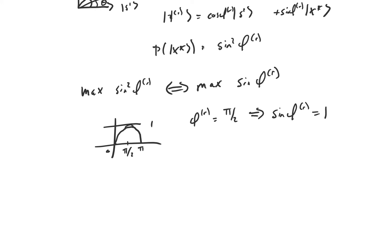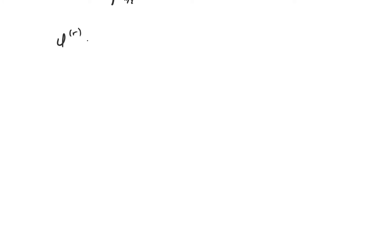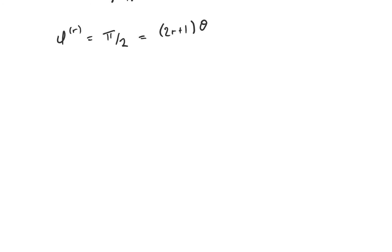That's because the system was in the state x-star before measurement — that's what φ_r equals π/2 means. So our goal is to get φ_r as close to π/2 as possible, because this maximizes the probability of finding the system to be in the state x-star upon measurement. Since φ_r is equal to (2r + 1) times θ, we just set this equal to π/2 and solve for r.